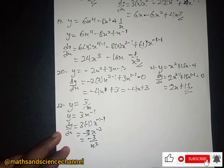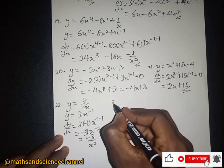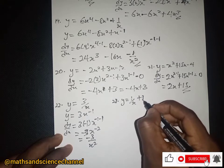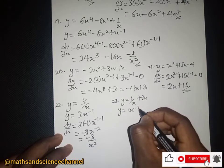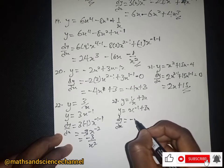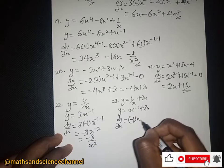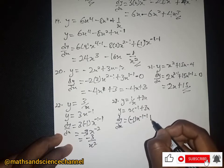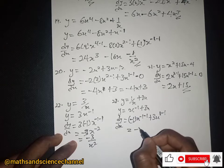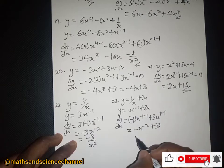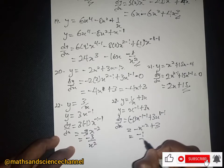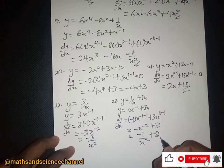Example 23: y equal to 1/x plus 3x, which can be written as x to the power negative 1 plus 3x. The dy/dx will be — we drop the negative 1 and subtract 1, then for 3x we drop the 1 which is just 3 — so we get negative x to the power negative 2 plus 3, which is negative 1 over x squared plus 3.